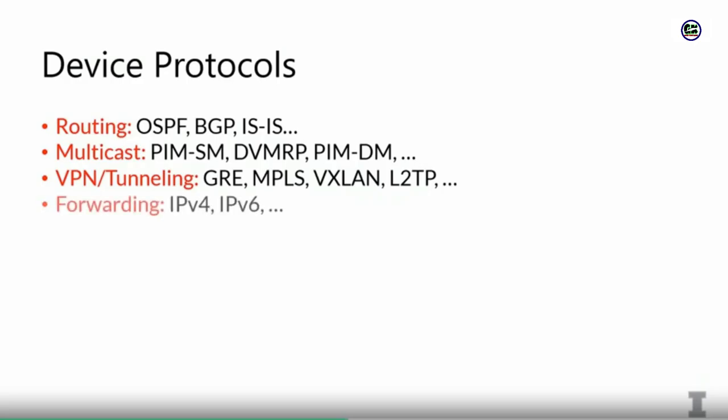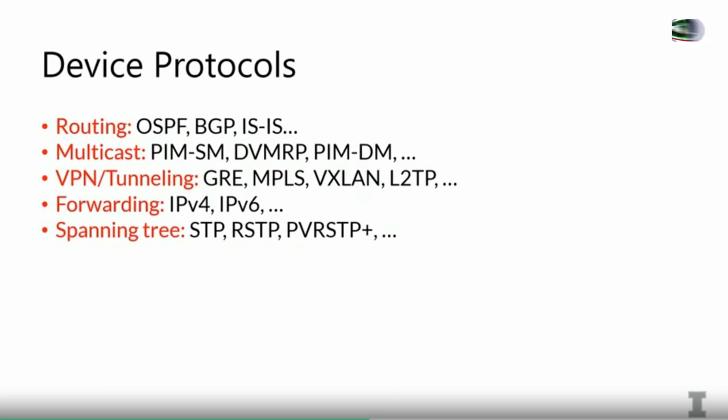There are also protocols for forwarding. We use IPv4 a lot, and there's also IPv6 — these are protocols used to construct packets at layer three. There are also spanning tree protocols. We talked about the spanning tree protocol in Ethernet and how you can create a spanning tree on your network topology. There are variants of the spanning tree protocol that converge faster or create more resilient spanning trees, like RSTP and PV RSTP+.